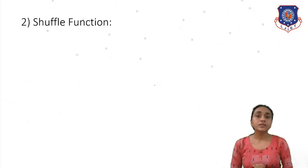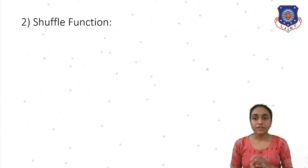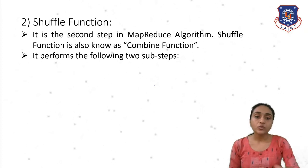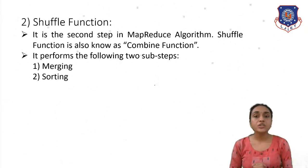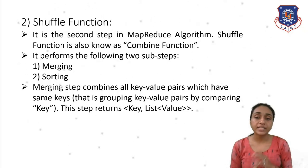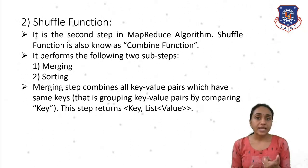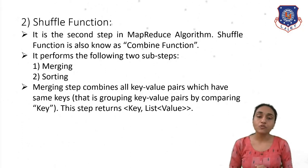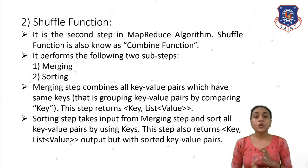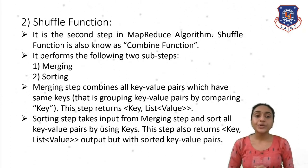The second step of the MapReduce algorithm is shuffle. The shuffle function is also known as the combine function. It performs two sub-steps: merging and sorting. The merging step combines all key-value pairs that have the same keys — grouping key-value pairs by comparing keys — and returns a set with the first component as a key and the second as a list of all values. The sorting step takes inputs from the merging step and sorts all key-value pairs by their keys, returning the key and list of values in sorted order.